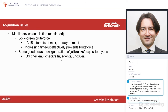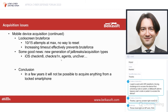Using the checkm8 vulnerability, you can still acquire some data — system data, pictures, Wi-Fi connections, list of applications — even without the passcode, though most user data remains encrypted. For Android, there are manufacturer-specific methods as well. The overall trend, however, is toward stricter security: in a few years it may be nearly impossible to acquire anything from a locked smartphone when the passcode is unknown.